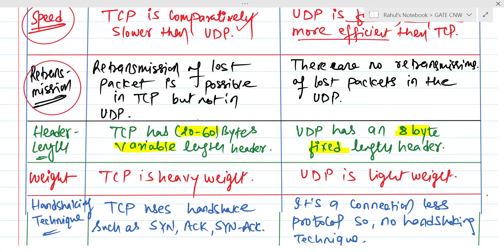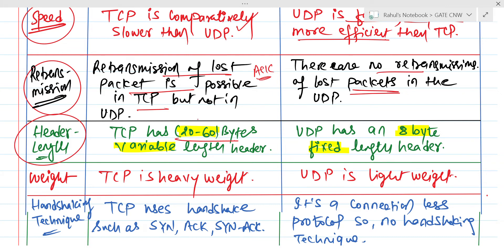The next factor is retransmission. Retransmission of a lost packet will occur in TCP because if, after a particular timeout timer, the sender does not receive an acknowledgement, it is going to retransmit the data again. But there is no concept of acknowledgement in UDP, due to which UDP is not going to retransmit the lost packet. The next factor is header length: TCP header length is 20 to 60 bytes, which is variable in length, but UDP's header length is fixed at 8 bytes.